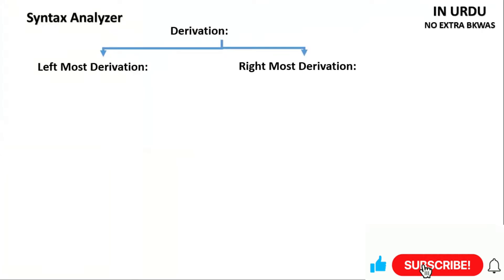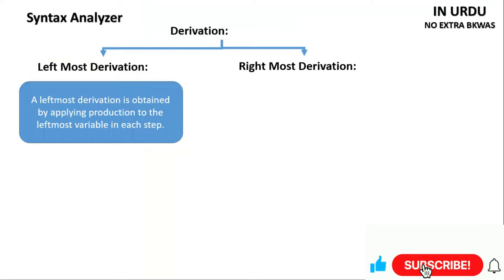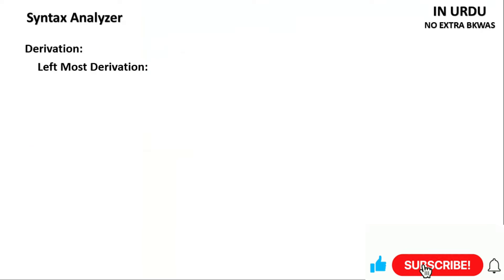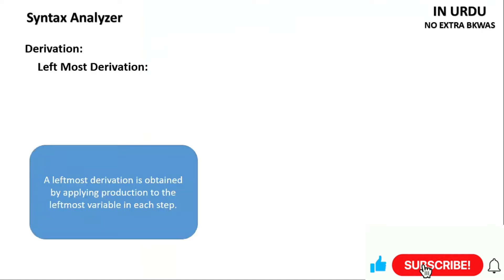Left-most derivation is applied to the production — we apply it to the left-most variable and expand that variable. Left-most derivation is obtained by applying production to the left-most variable in each step.